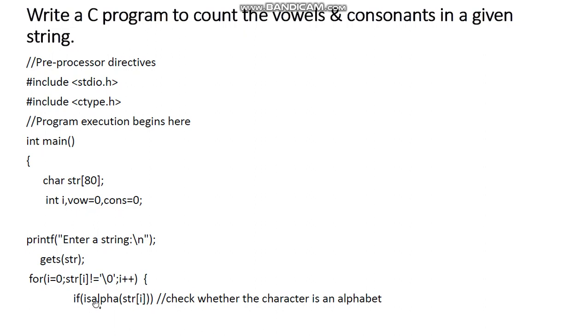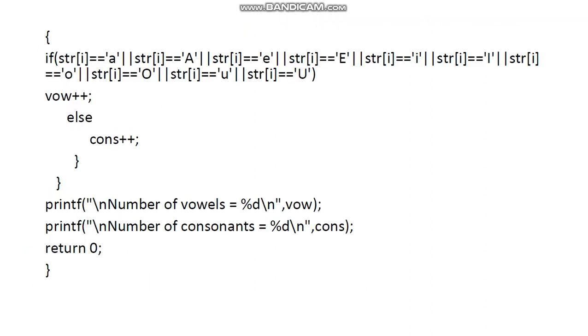Then within the loop, the first thing is we need to check whether the current character of the string is an alphabet. Only when the character is an alphabet, then we go for checking whether that would be a vowel or consonant.